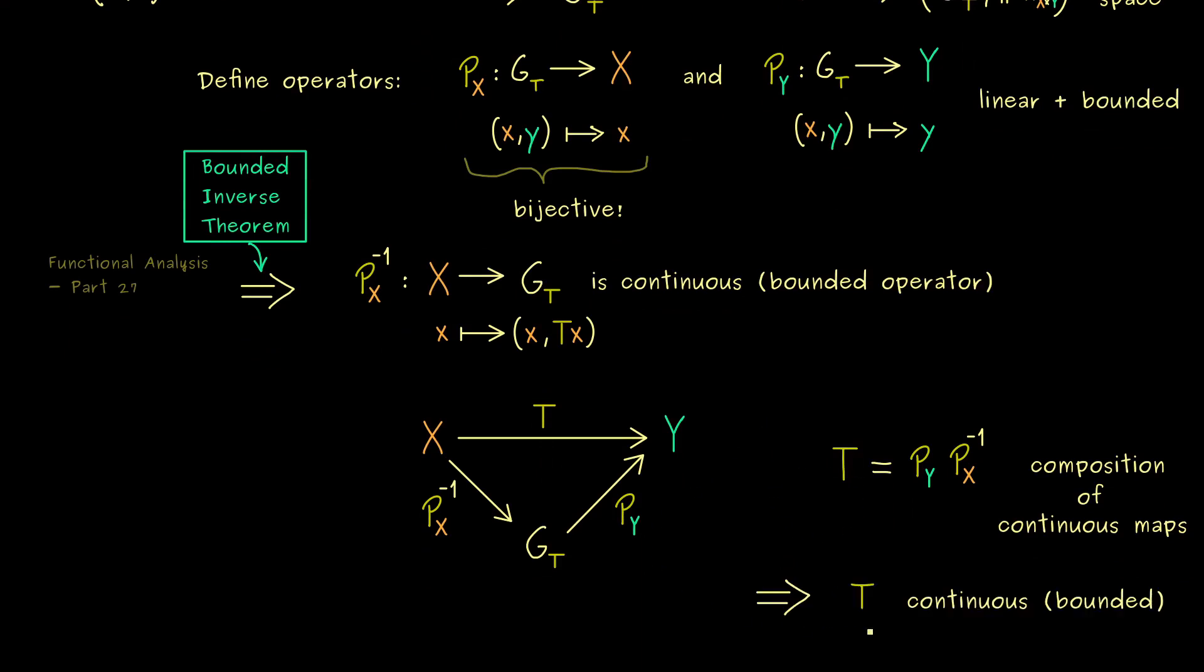This means if T is closed it's also a bounded operator. And that is now exactly the statement of the Closed Graph Theorem. And one immediate important conclusion for us for unbounded operators is the following: If you have a closed operator between Banach spaces that is unbounded then the domain of definition cannot be the whole space. For a closed unbounded operator the domain cannot be a Banach space.